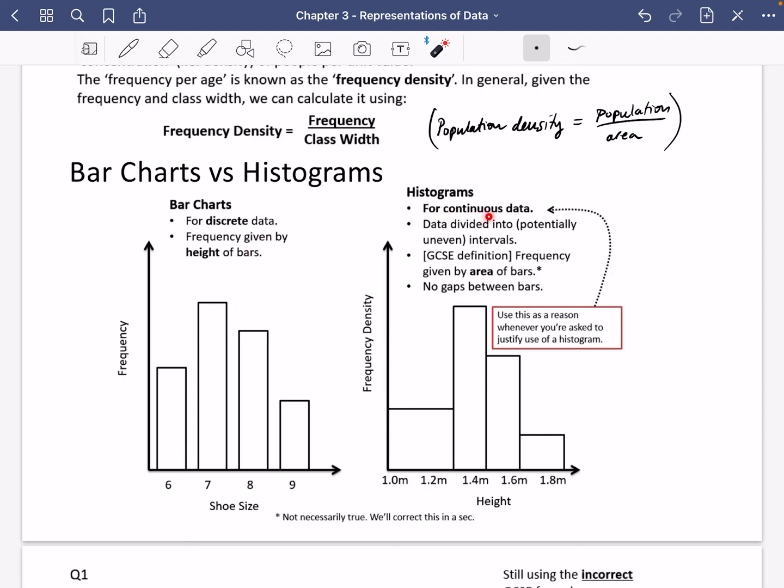For histograms, though, it is always for continuous data. Usually the data is divided into intervals, which should be, but they don't have to be even. So you'll see here this interval is not the same size as this one here. In the GCSE definition, the frequency is given by the area of the bars. But we're going to be changing this. We're actually going to be saying that the frequency and the area of the bars are just proportional. They're directly proportional. And last of all, there would be no gaps between the bars like there are here. This is probably the most important point that for histograms, it is for continuous data. So if they ever say, why are you using a histogram or justify the use of a histogram for this data, you should just say that the data is continuous.